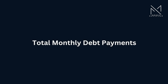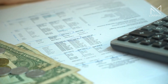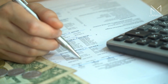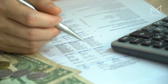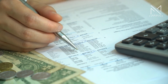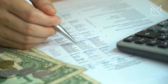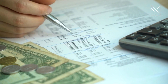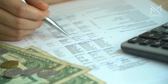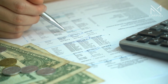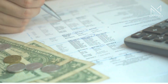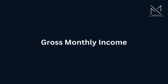Total monthly debt payments: this includes all of your monthly debt obligations, such as mortgage or rent payments, loan payments, auto loans, personal loans, student loans, minimum credit card payments, alimony or child support payments, and other monthly debt obligations.